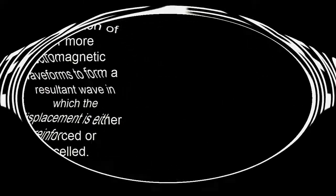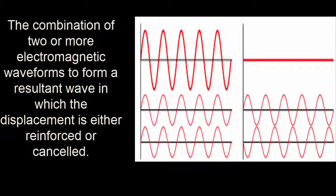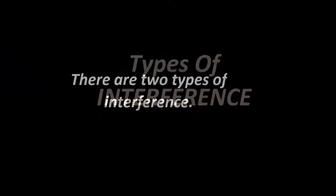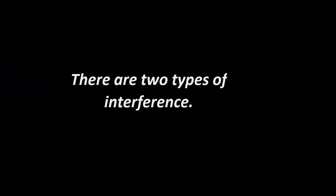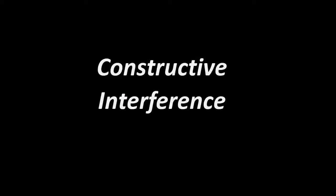Interference is the combination of two or more electromagnetic waveforms to form a resultant wave in which the displacement is either reinforced or cancelled. There are two types of interference: constructive interference and destructive interference.